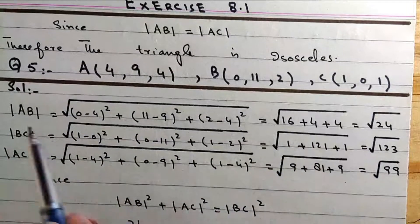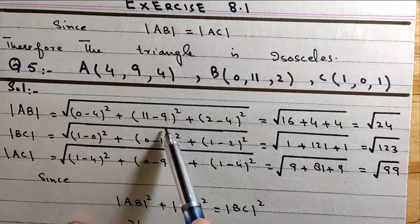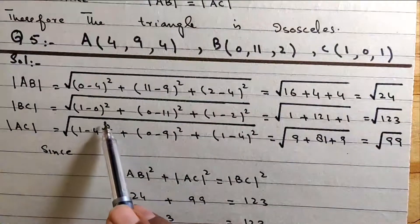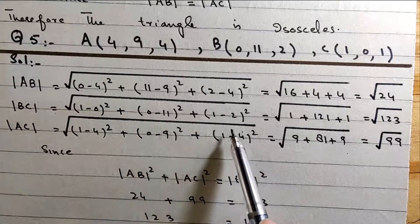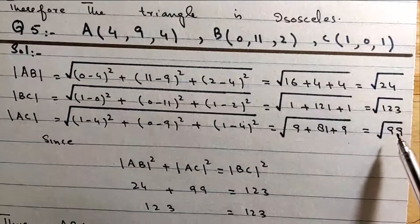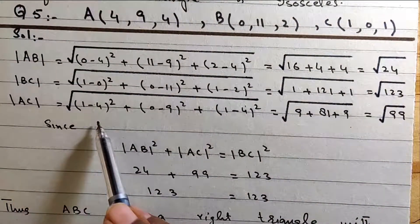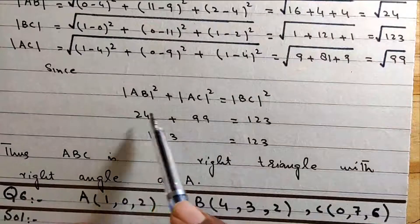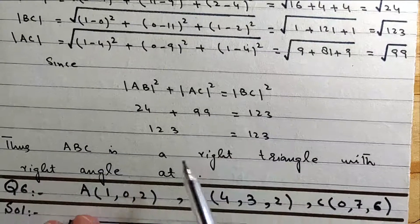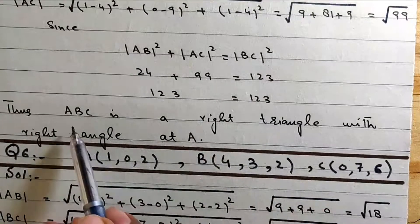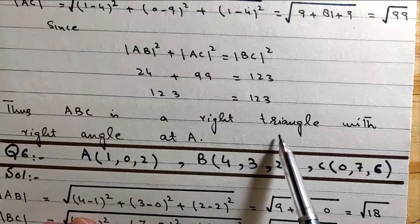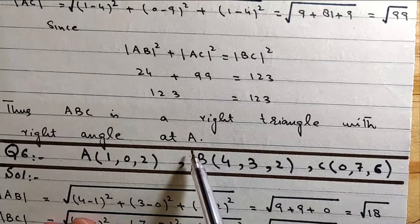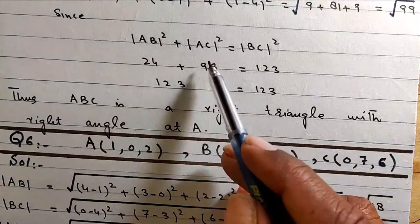Given A, B, and C: AB equals square root of (x2 minus x1) squared plus (y2 minus y1) squared plus (z2 minus z1) squared, and we get 125. BC gives 123. Since AB plus BC squared equals AC squared — the Pythagorean theorem is satisfied — therefore triangle ABC is a right triangle with the right angle at A.